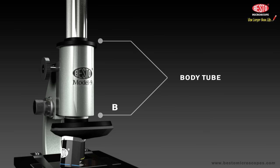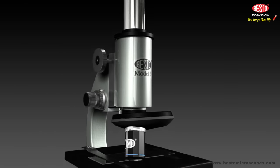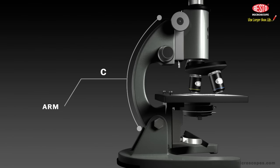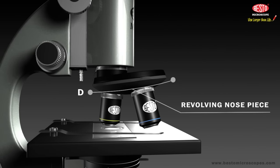C. The arm is the curved metal piece that holds the body tube in place over the stage and the base. D. The revolving nosepiece holds the objectives and allows you to change objectives while looking at a slide or sample.